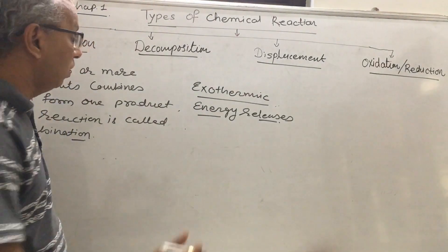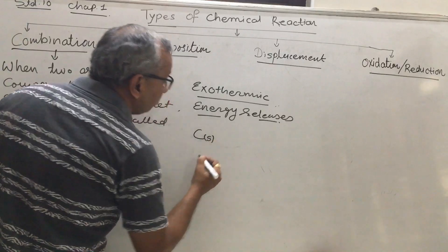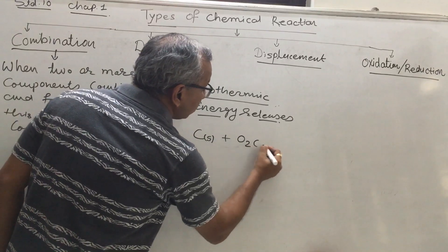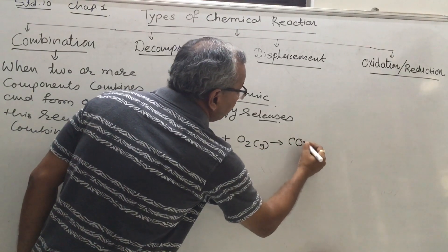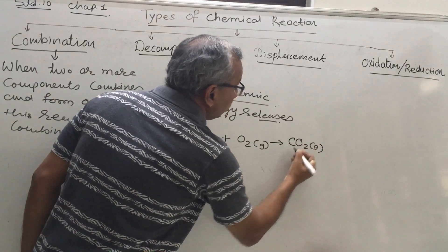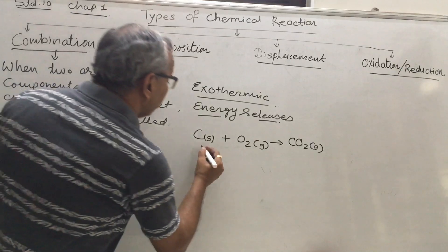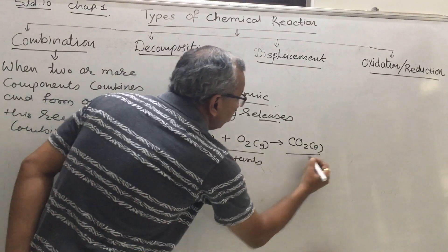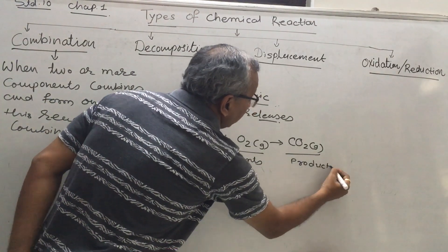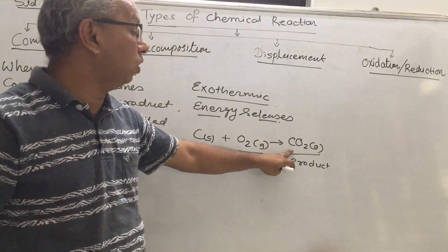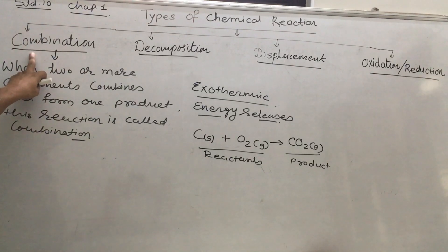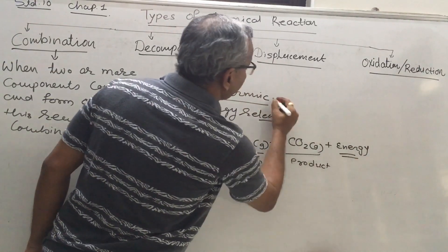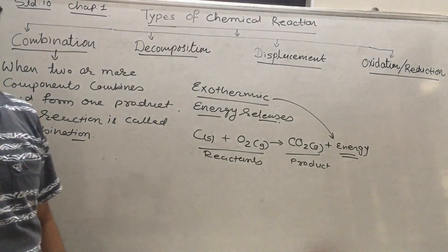First example: carbon in solid form, also known as coke or coal, burns with oxygen from air in gaseous form to produce carbon dioxide CO2. Two reactants — carbon and oxygen — combine to produce one product. That is why this is a combination reaction, and energy is released on the right-hand side, making it exothermic.